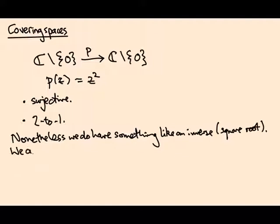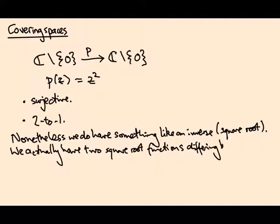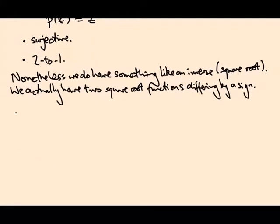And they differ by a sign. More precisely, if I take the complex numbers without the origin and cut out a whole half line going up from the origin to minus infinity on the x-axis, it's called the branch cut.